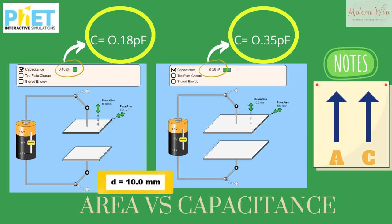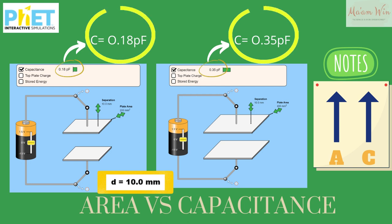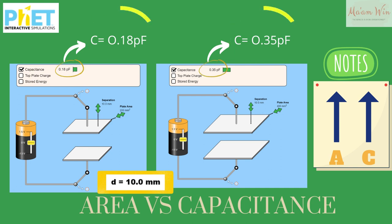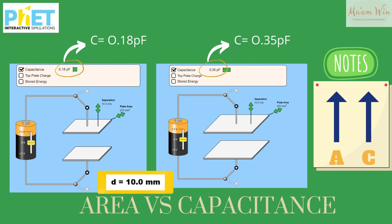This simulation using PhET demonstrates that the capacitance of a parallel plate capacitor is proportional to the area of its plates. With separation distance constant at 10.0 millimeters, if we increase the plate area from 200 square millimeters to 400 square millimeters, the capacitance increases from 0.18 picofarads to 0.35 picofarads.